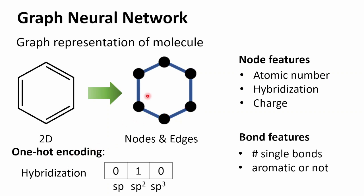Usually these features are represented using one-hot encoding. For instance, to represent the hybridization of a carbon atom, we create a vector of dimension 3. If the atom is sp, we put a one in the first position. Since these are sp2 carbons, we put a one in the middle position corresponding to sp2. Similarly, atomic number is encoded in a vector of length 20 to 100, with a one at the position corresponding to that atomic number.